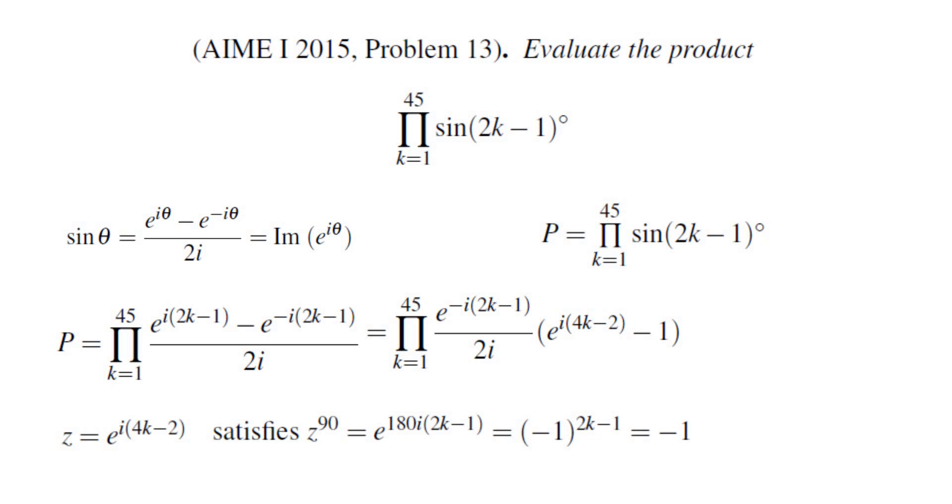Therefore we have 45 numbers e^(i(4k-2)) for k equals 1 to 45 that are roots of z^90 + 1 = 0.